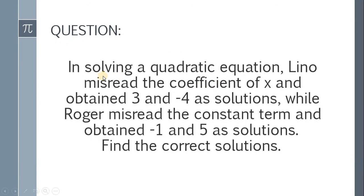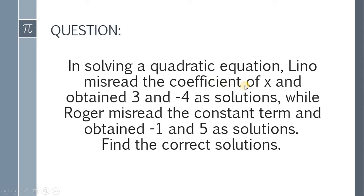Here's the question. In solving a quadratic equation, Lino misread the coefficient of x and obtained 3 and negative 4 as solutions, while Roger misread the constant term and obtained negative 1 and 5 as solutions. Find the correct solutions.